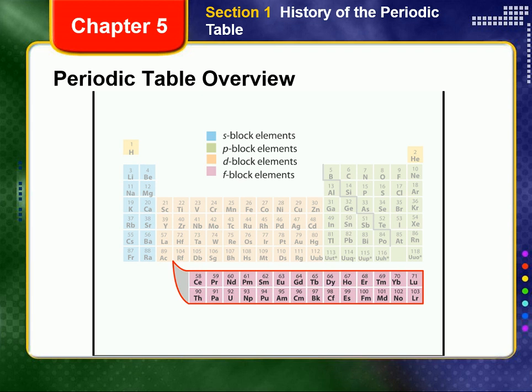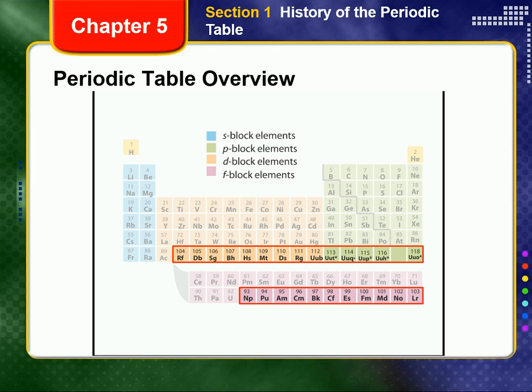Note that there's a special block of elements below the main table known as the lanthanide and actinide series of elements. They are grouped together and placed below the main body of the table to keep it from becoming too wide. Elements with atomic numbers greater than 92 do not occur naturally but can be produced in laboratories. Most are not very stable and decay rapidly.